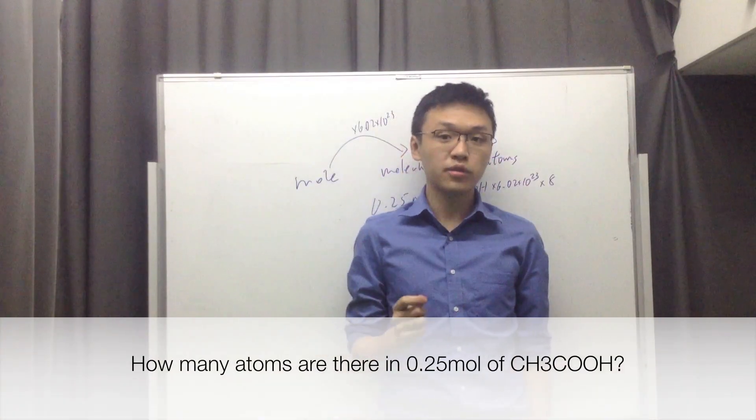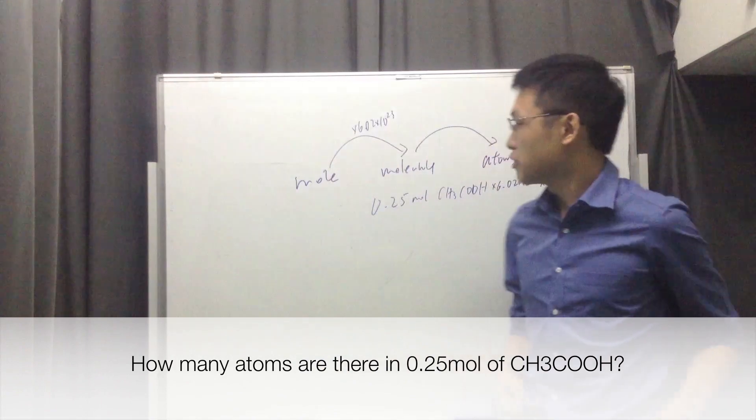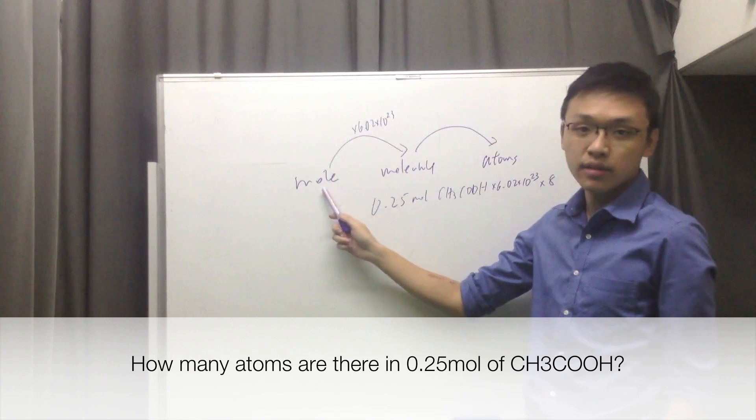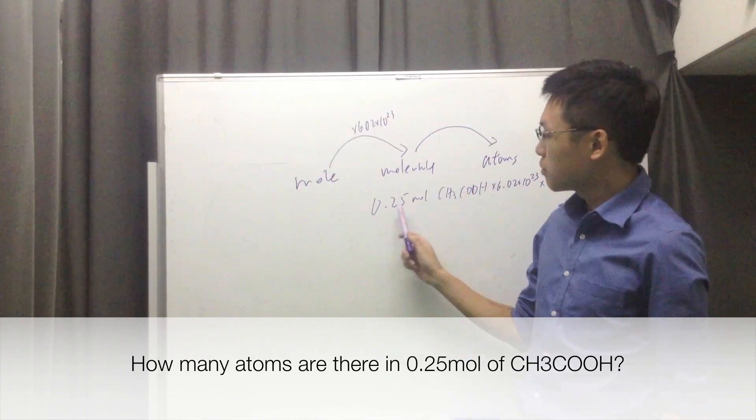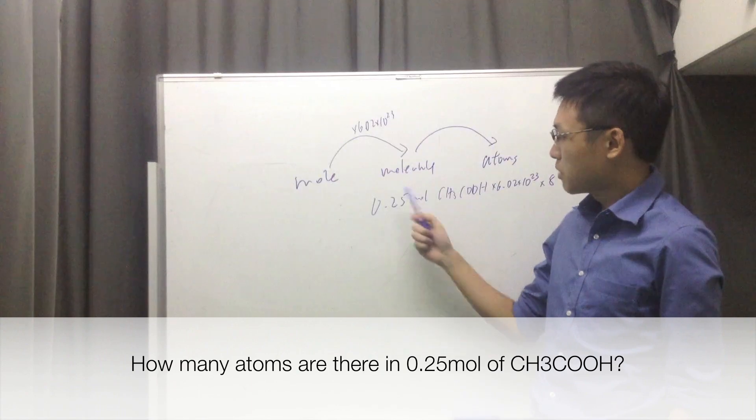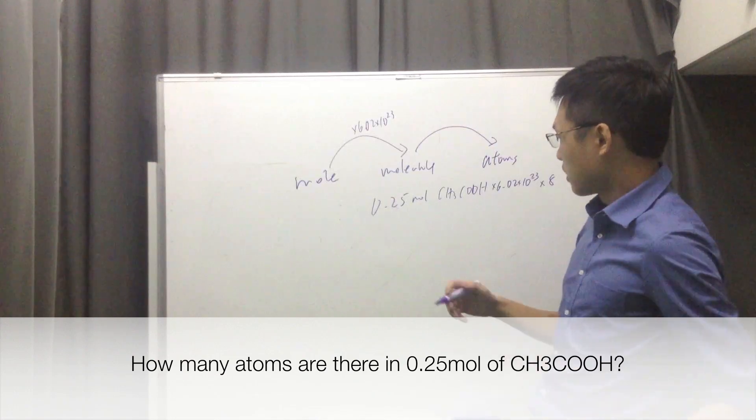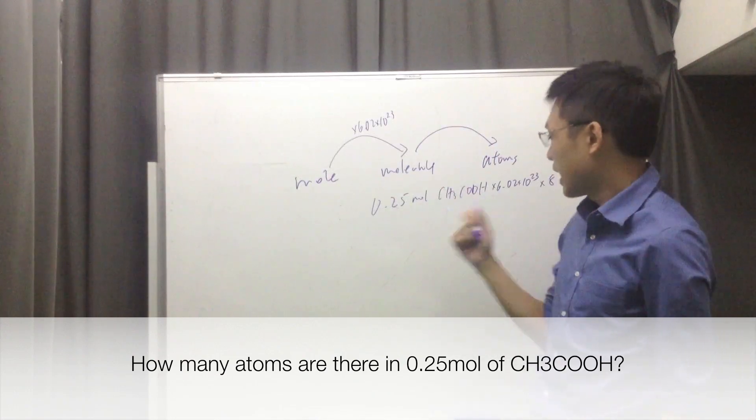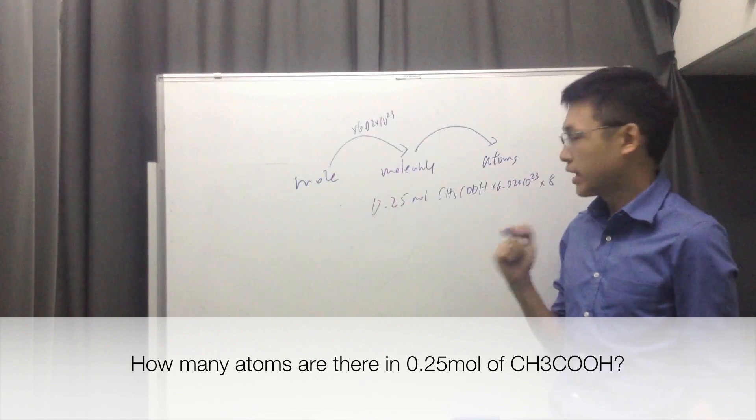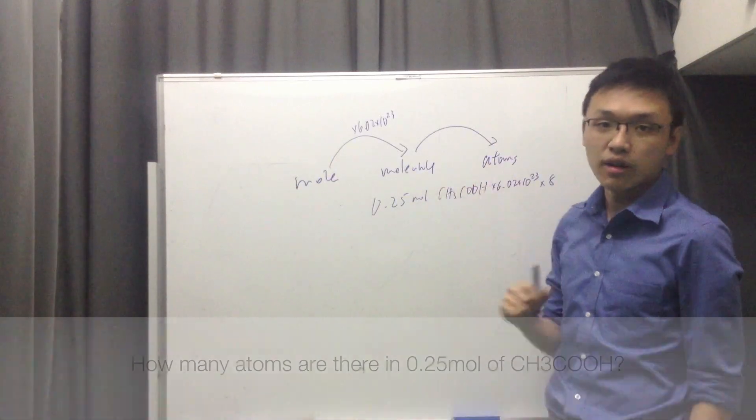The question says, there are 0.25 moles of CH3COH. How many atoms are there in total? So we apply what we've learned. You can see we're basically going from moles to atoms. We're given the number of moles and we're trying to find the number of atoms. So there's 0.25 moles. First thing, we need to find how many molecules there are. We cannot go straight to atoms, remember. So we multiply by 6.02 times 10 to the 23rd to get the number of molecules. Now we've got the number of molecules. But in each molecule, how many atoms are there? If you count, you can figure out there are eight atoms in CH3COH. In each molecule, there are eight atoms. So after you're getting the number of molecules, you multiply by eight in order to get the number of atoms there are.